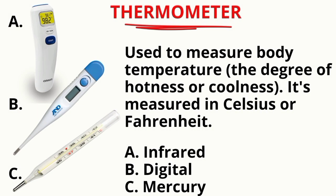Thermometer. It's used to measure body temperature, that is the degree of hotness or coolness. It's measured in Celsius or Fahrenheit. A is the infrared thermometer, B is the digital, and C is the mercury thermometer. The infrared thermometer is able to assess temperature without body contact.